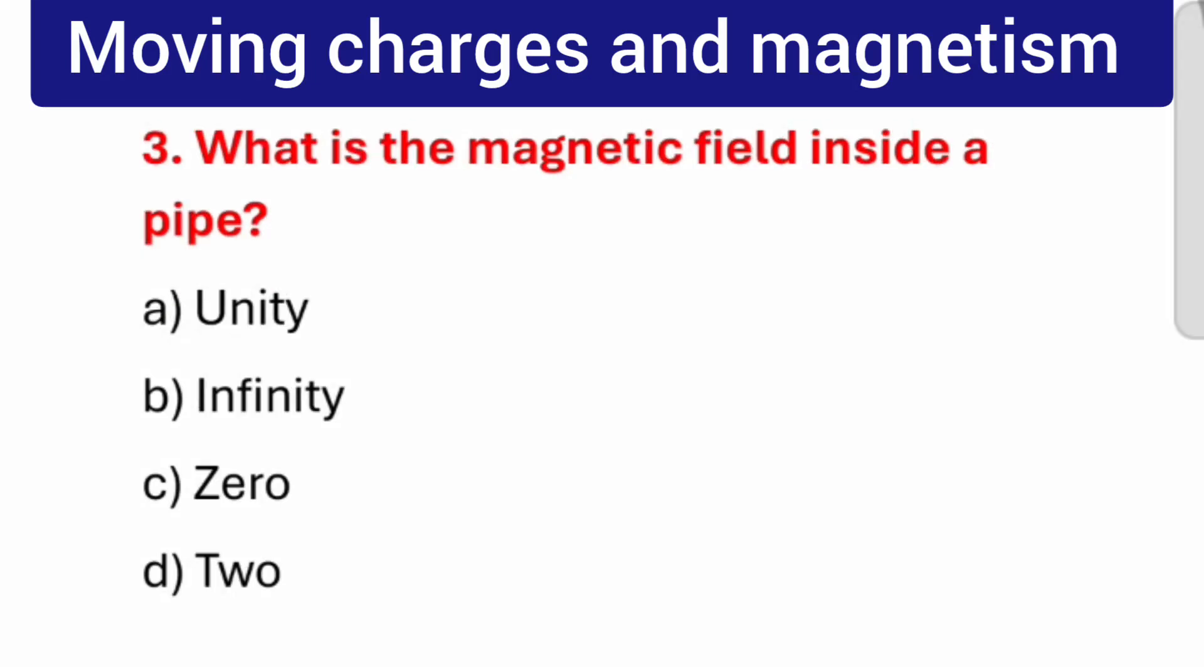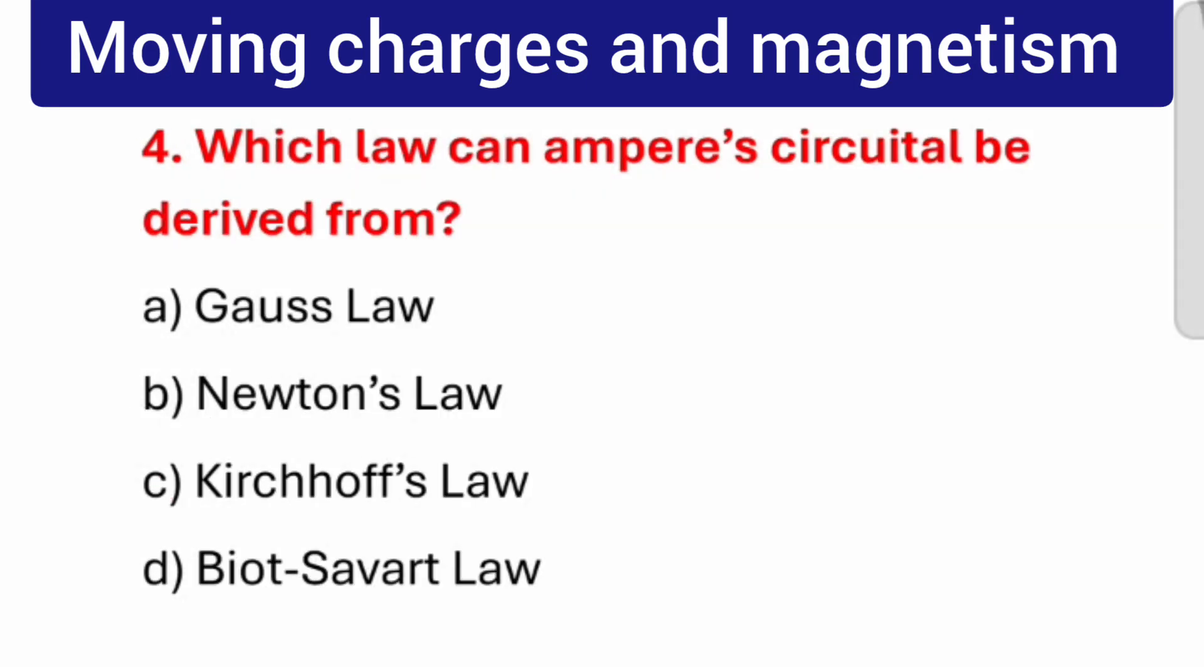Question number 3: What is the magnetic field inside a pipe? The correct answer is Zero. Question number 4: Which law can Ampere's circuital law be derived from? The correct answer is Biot-Savart law.